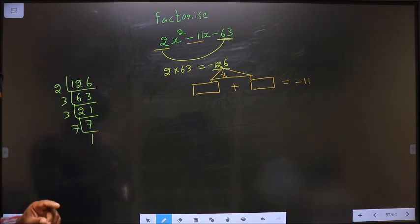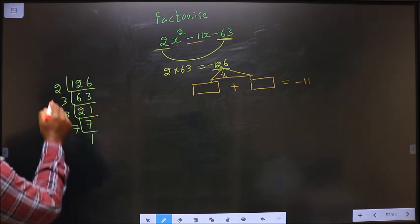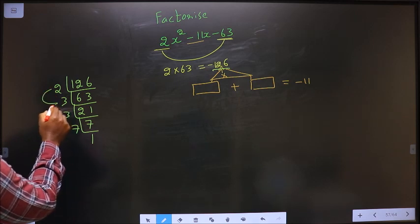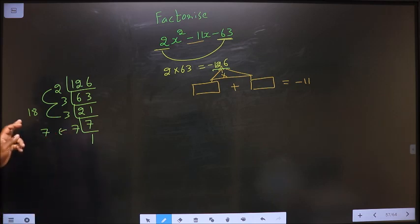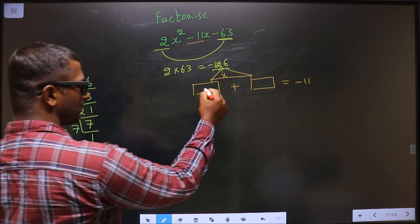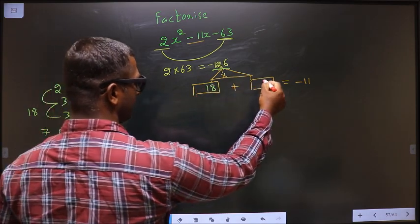So now the 2 numbers are 2 into 3, 6. 6 into 3, 18. And 7. 18 times 7 is 126. So 18, 7.